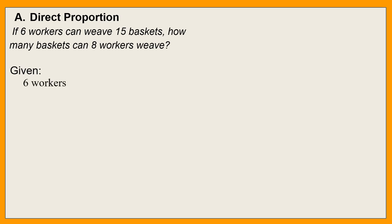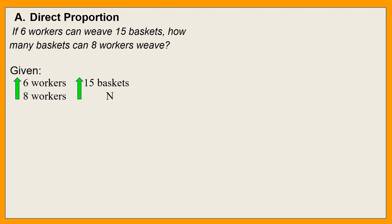Given natin ay 6 workers, 15 baskets. So, 8 workers and N baskets kasi hindi pa natin alam. Since 8 workers, sigurado dadami ang baskets na magagawa. Ito na yung parehong tataas. Kaya siya direct dahil parehong lalaki ang numbers.